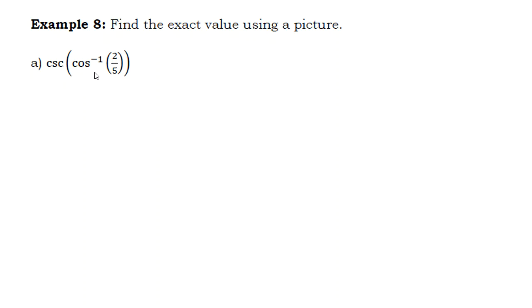So we're gonna approach these a little bit differently. We're gonna draw a picture of this situation. So let's first just think about what's inside the parentheses here, which is the inverse cosine of two-fifths. What does that mean? What is that asking you?